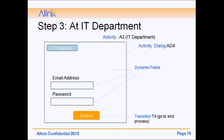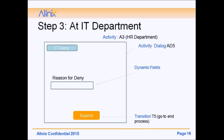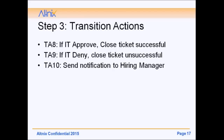The third activity is at the IT department, which can also approve or deny. If IT approves, Activity Dialogue 84 collects the email address and password, hit submit — Transition T4 leads to a successful end of the process. If IT denies, you enter the reason for denial and submit — Transition T5 leads to an unsuccessful end. Transition actions include TA8 (close ticket successfully on IT approve), TA9 (close ticket unsuccessful on IT deny), and TA10 (send notification to manager).